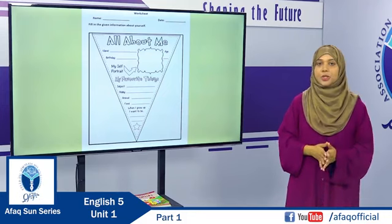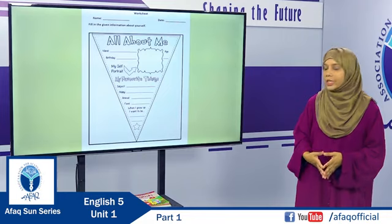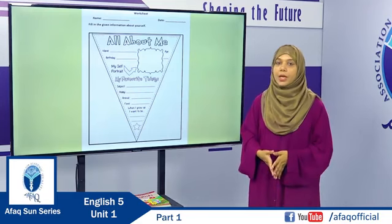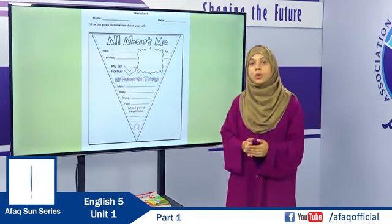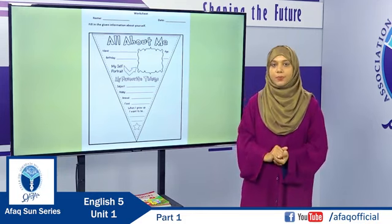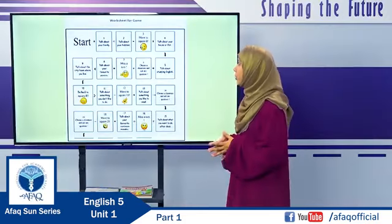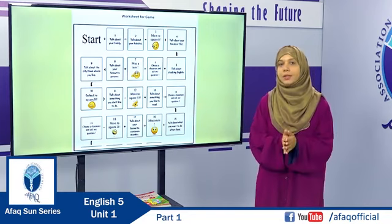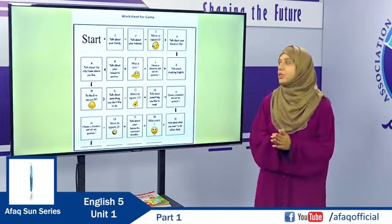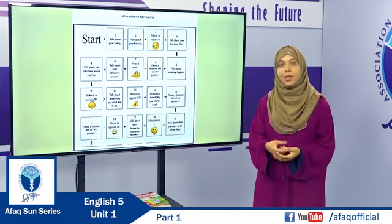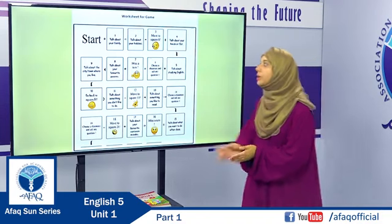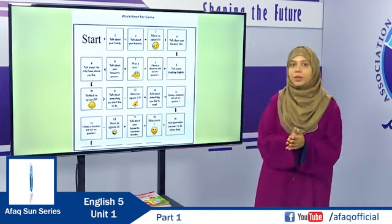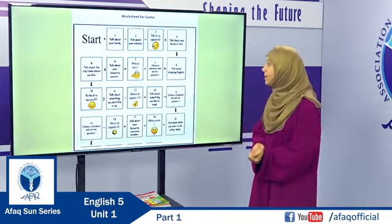Respected teachers, Afaq has provided a worksheet to cover this lesson with DLP number 1. In this worksheet, students write different information about themselves and then orally introduce themselves to their classmates. In addition to this worksheet, a game has also been provided. Students will need a dice and some tokens, just as in Ludo or Monopoly. Each student will have one token and roll the dice one by one, walking through the lines using their token.